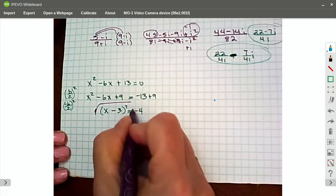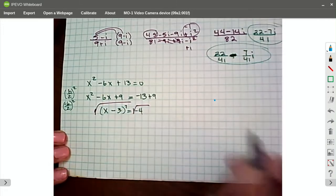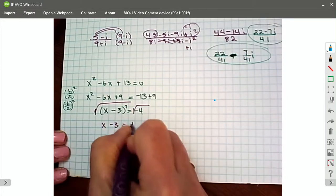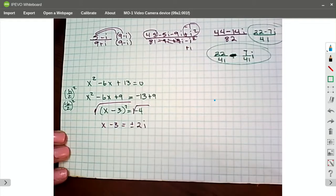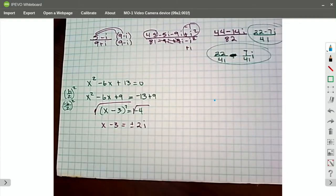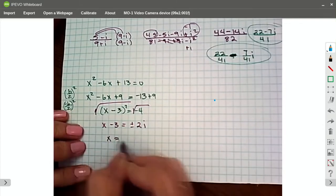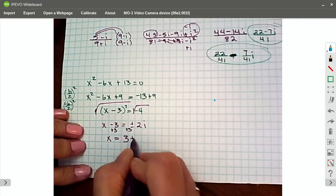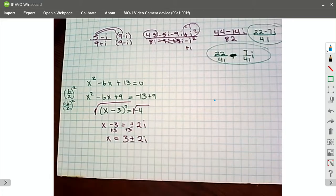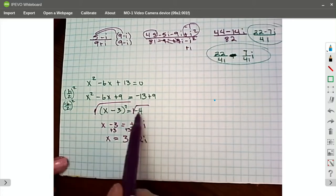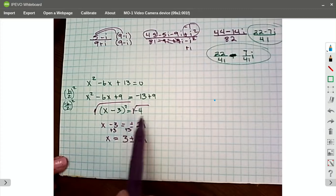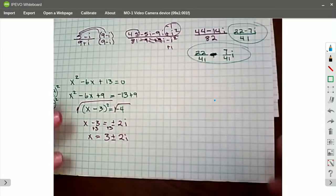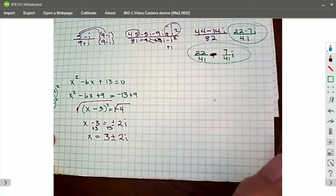Square root of both sides. So I have x minus 3 equals plus or minus 2i. And x equals 3, because I'm going to add that 3 to both sides, plus or minus 2i. And sometimes these will not be a square number, and you can't leave it out. So it would just be still up under the radical. Not a problem either way.